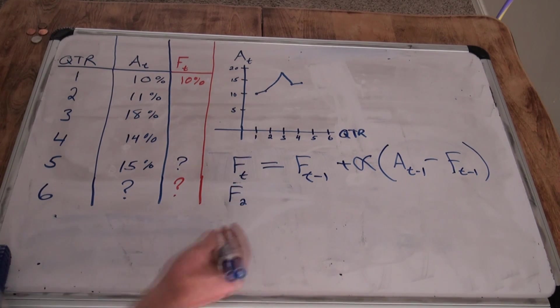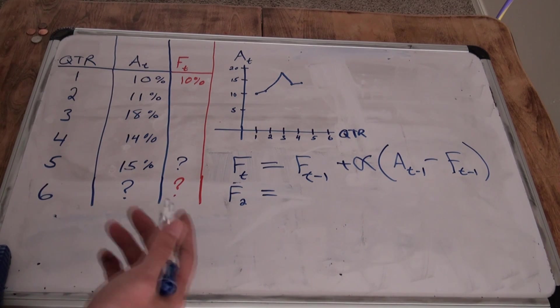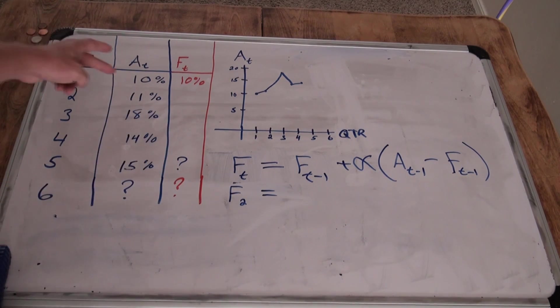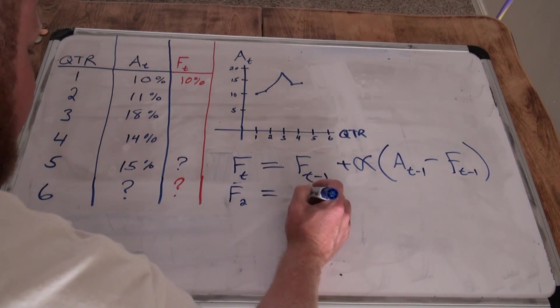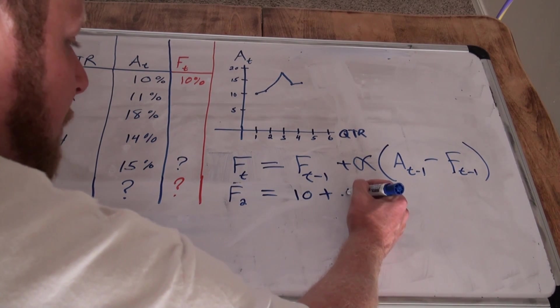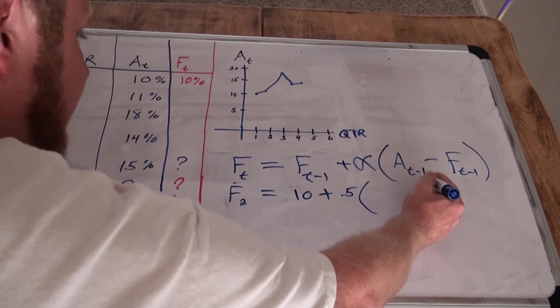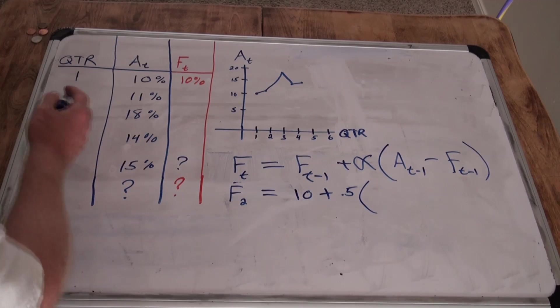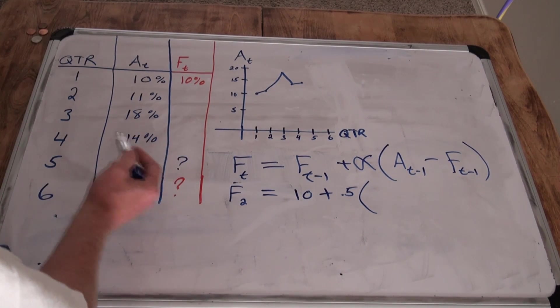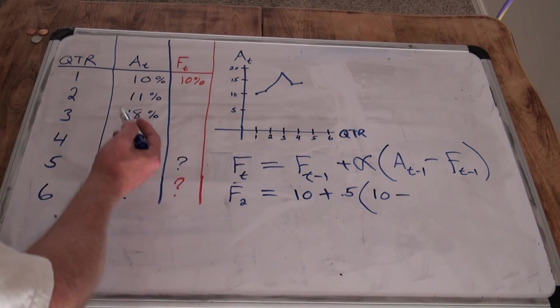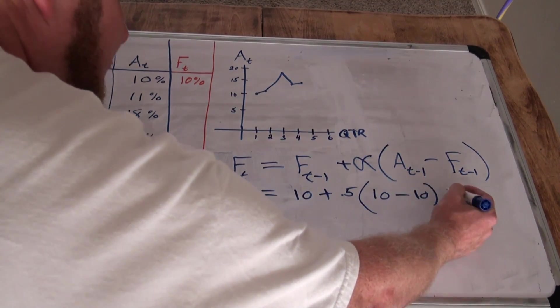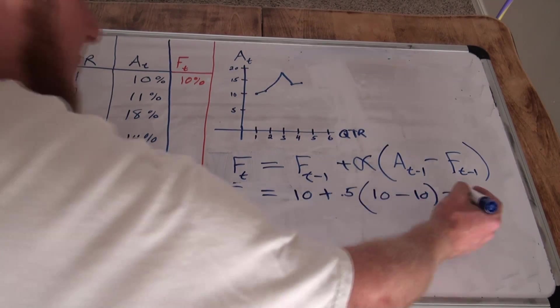So, forecast in the second quarter is equal to the forecast of the first quarter. Now I filled that in as 10%. It's 10% because we don't really have a forecast for the first quarter. Whatever the actual was, we will forecast it because there's no previous data to go by. So the forecast for the first quarter is 10%. Plus, our alpha was point five times actual t minus one. So, t is two, I'm looking at the second quarter. So, t minus one would be the first quarter actual, 10%, minus the forecasted t minus one, which is 10% as well. 10 minus 10 is zero, times point five is zero. So, that equals 10.